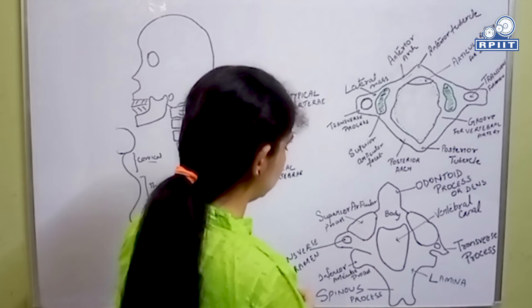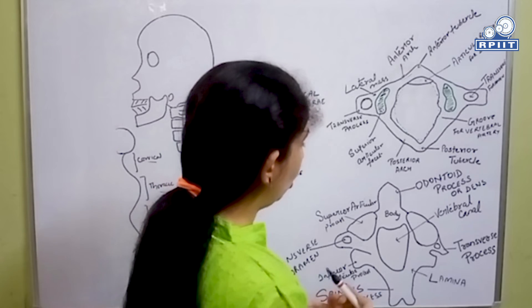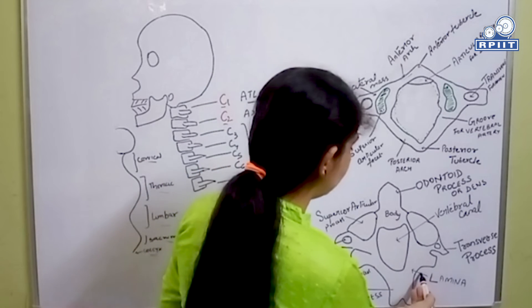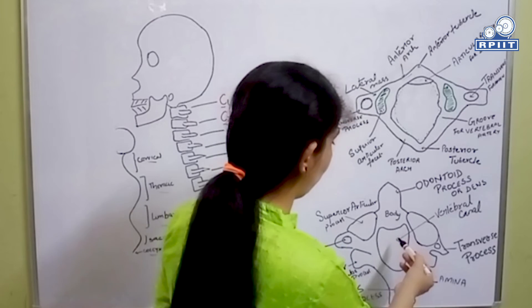This is the lamina, which is strong and thick, and this is the vertebral canal.